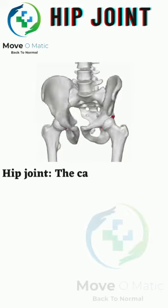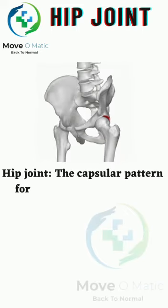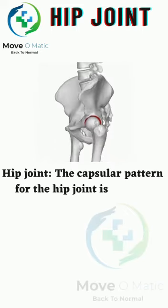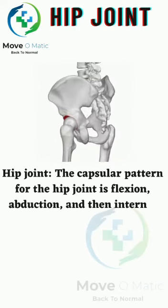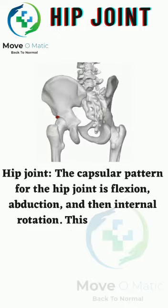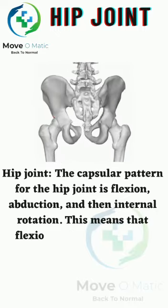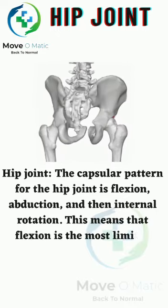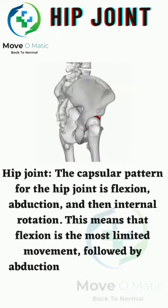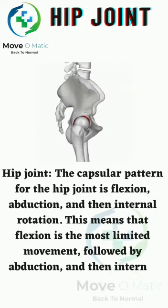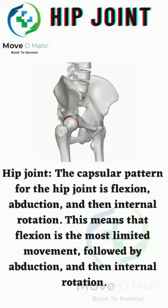Hip joint: The capsular pattern for the hip joint is flexion, abduction, and then internal rotation. This means that flexion is the most limited movement, followed by abduction, and then internal rotation.